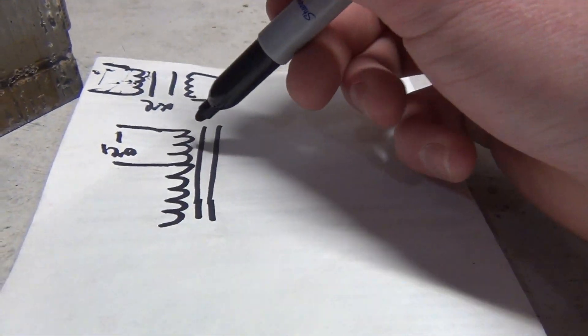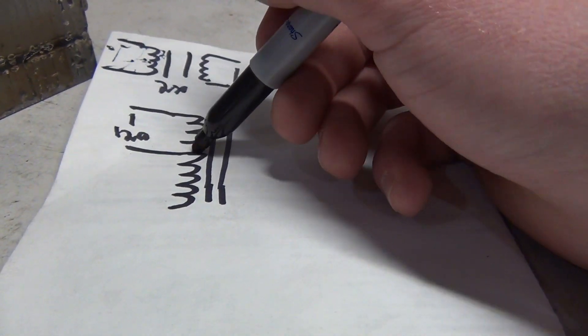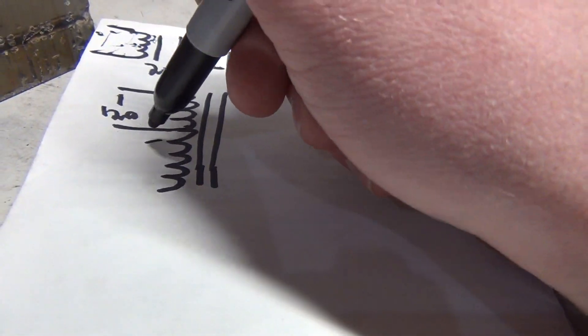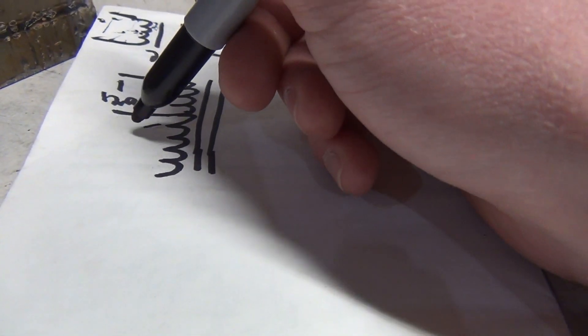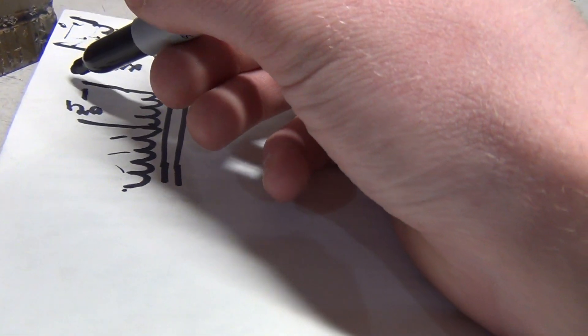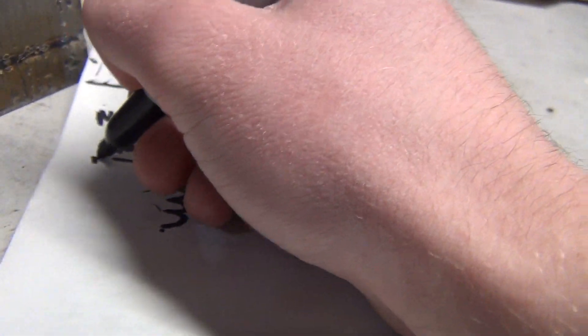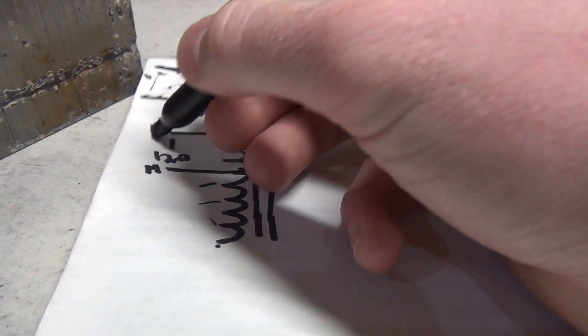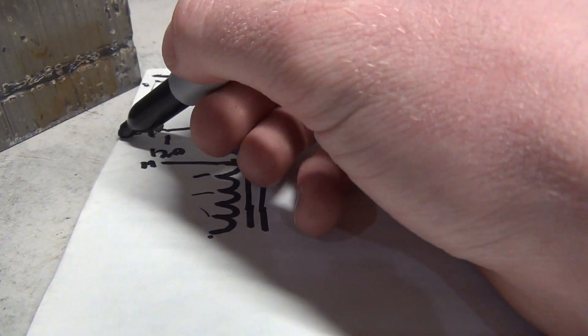So across here you got your 120 from here to here, but because it's all on the same core you get 120 here, and then say on this tap you get 140, 160, 180, 200, 240 right there. So you take your neutral here, there's your hot - neutral to hot is 120 - and then you take neutral and put it down to here and you get 240.